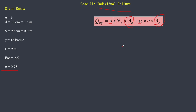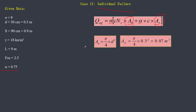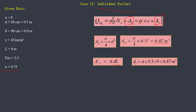Since it is a circular pile, the cross-sectional area Ap = (π/4) × d² = (π/4) × 0.3² = 0.07 m². The surface area of an individual pile As = π × d × L. Use the full length L, not a critical length. So As = π × 0.3 × 9 = 8.47 m².